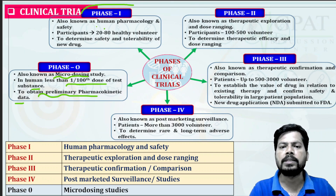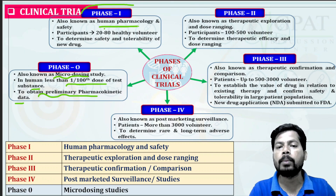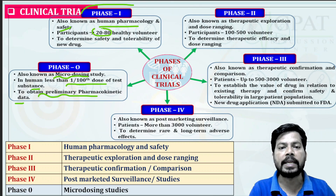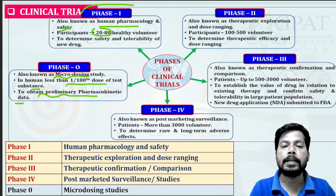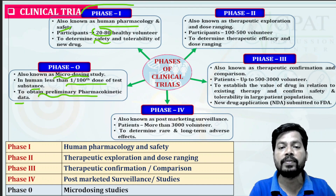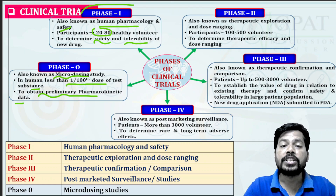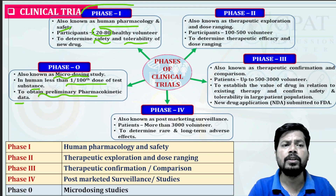Phase One clinical trials are also known as human pharmacology. Here, detailed pharmacology of the drug and its safety in the patient is studied. Participants are around 20 to 80 healthy volunteers. Phase One is mainly used to determine the safety and tolerability of the new drug, and how much the patient responds to different doses of the drug.